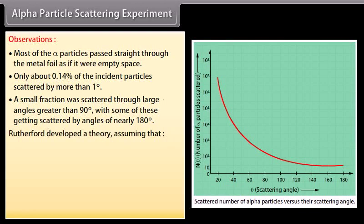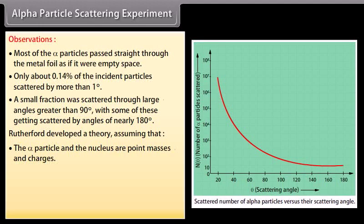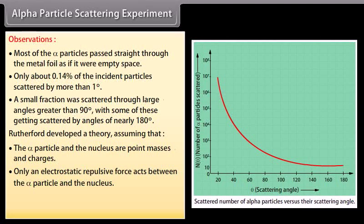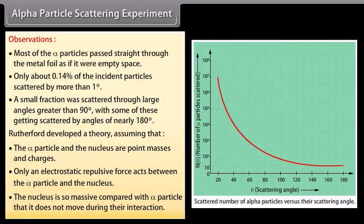Rutherford developed a theory assuming that the alpha particle and the nucleus are point masses and charges. Only an electrostatic repulsive force acts between the alpha particle and the nucleus. The nucleus is so massive compared with alpha particle that it does not move during the interaction.